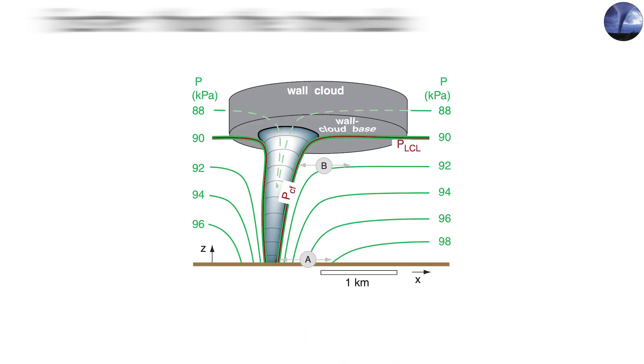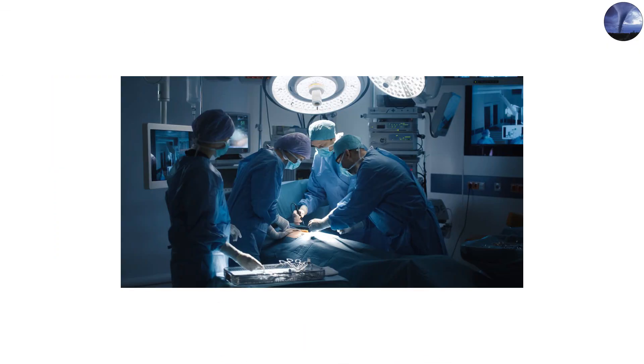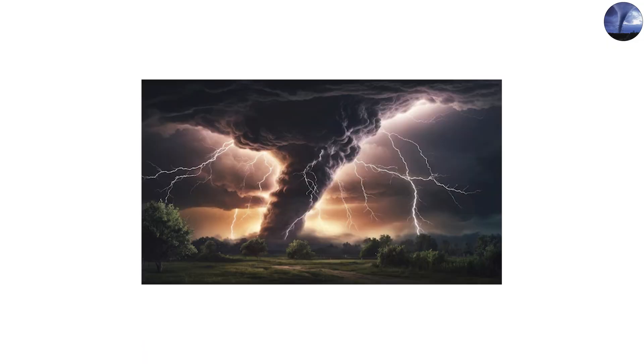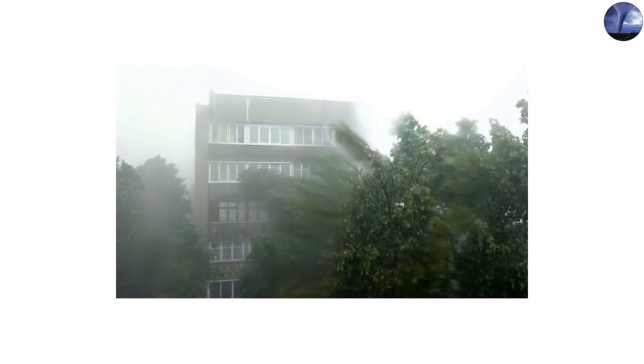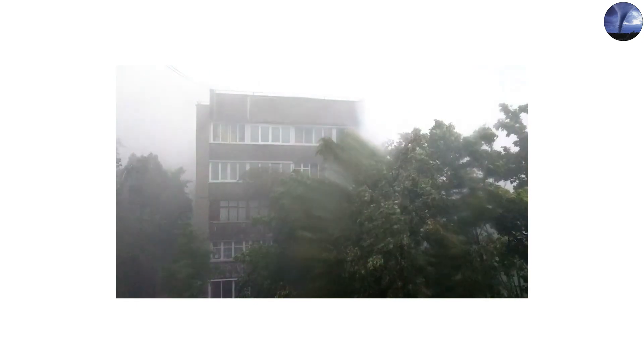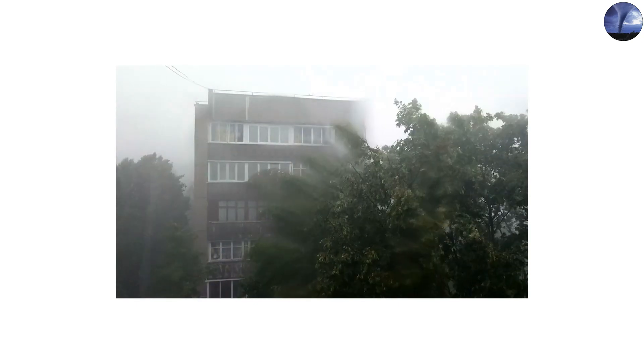The smaller vortices spin faster than the tornado, creating surgical-like devastation streaks. A powerful tornado rips through a neighborhood, destroying one house but leaving the one next door damaged. That sharp discrepancy is often generated by a suction vortex passing over one location and not another.